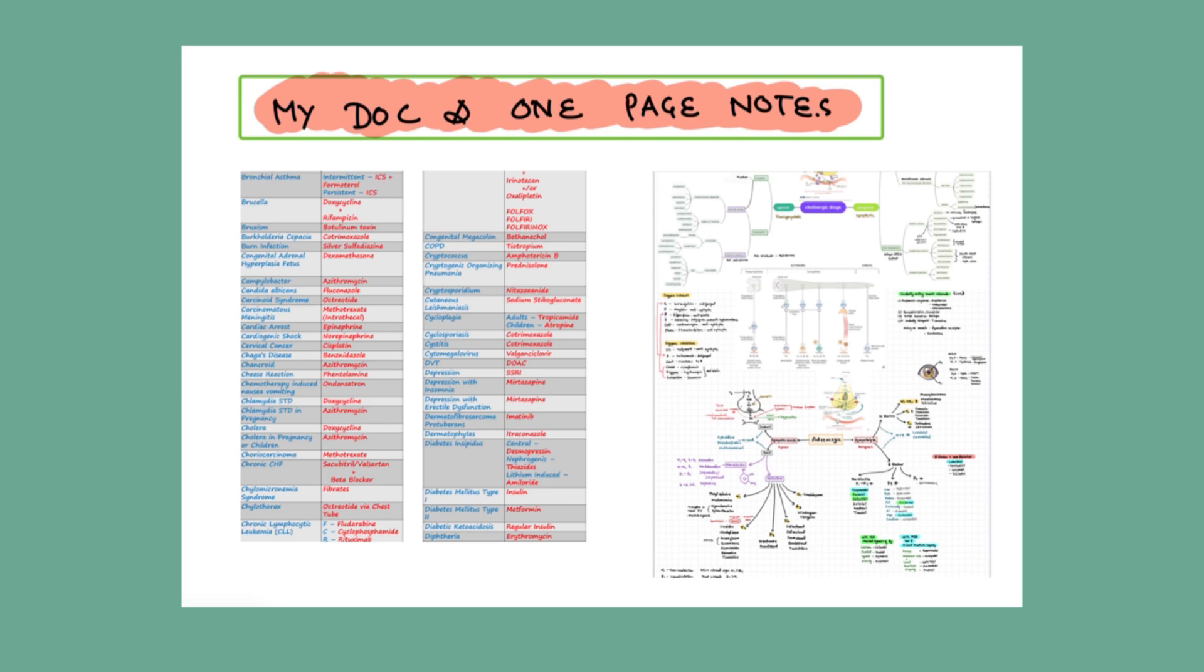Similarly when you come to the B alphabet for babiosis the drug of choice is atovaquone and azithromycin. For bacterial vaginosis is metronidazole and for bacteroids also. And similarly for the other alphabets. So I use this during my preparation to complete my DOC part. And I used to revise it multiple times because two to three questions will be coming from it in a more or less integrated way. So you can also visit this multiple times and I will be sharing this on my telegram channel.